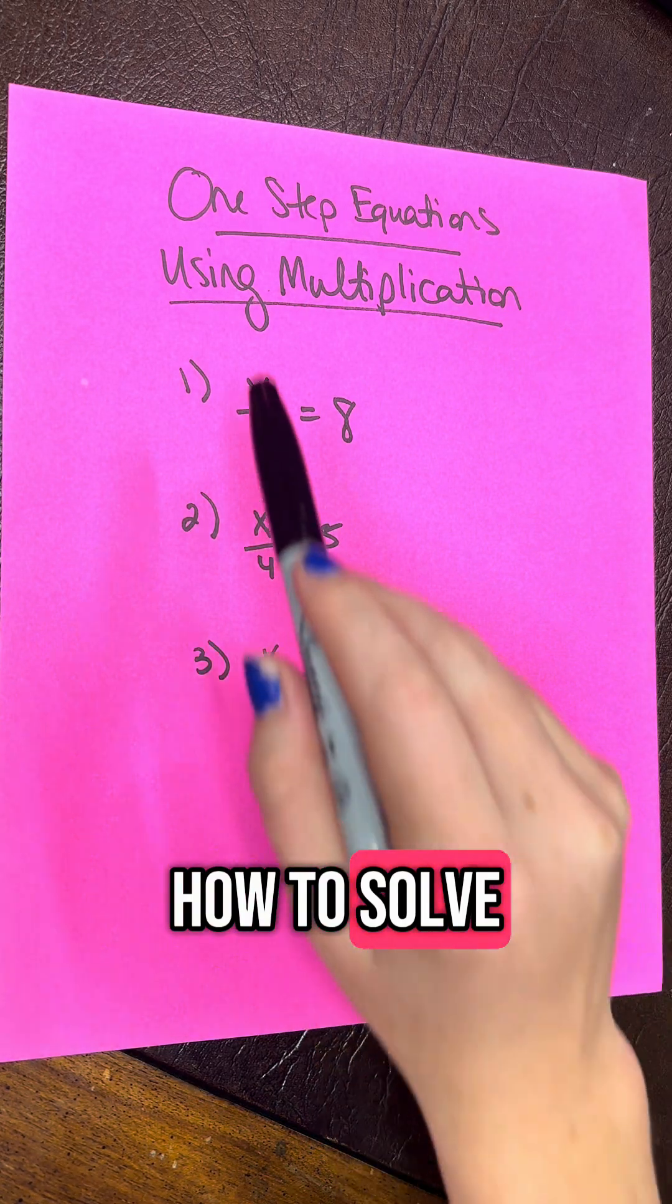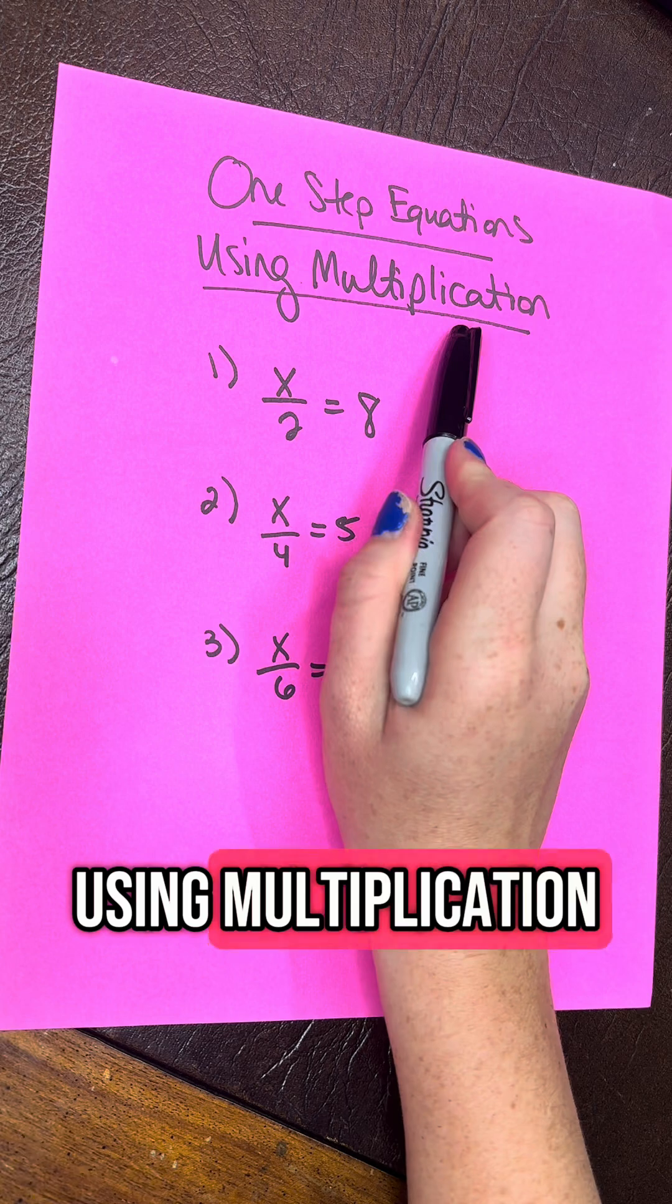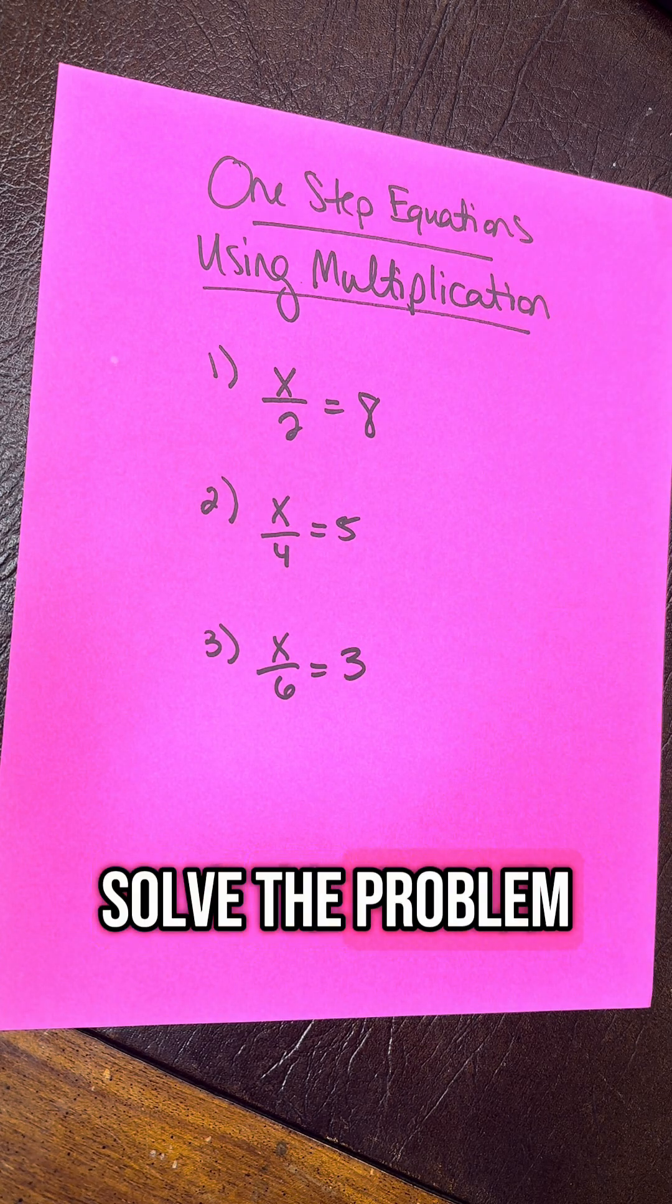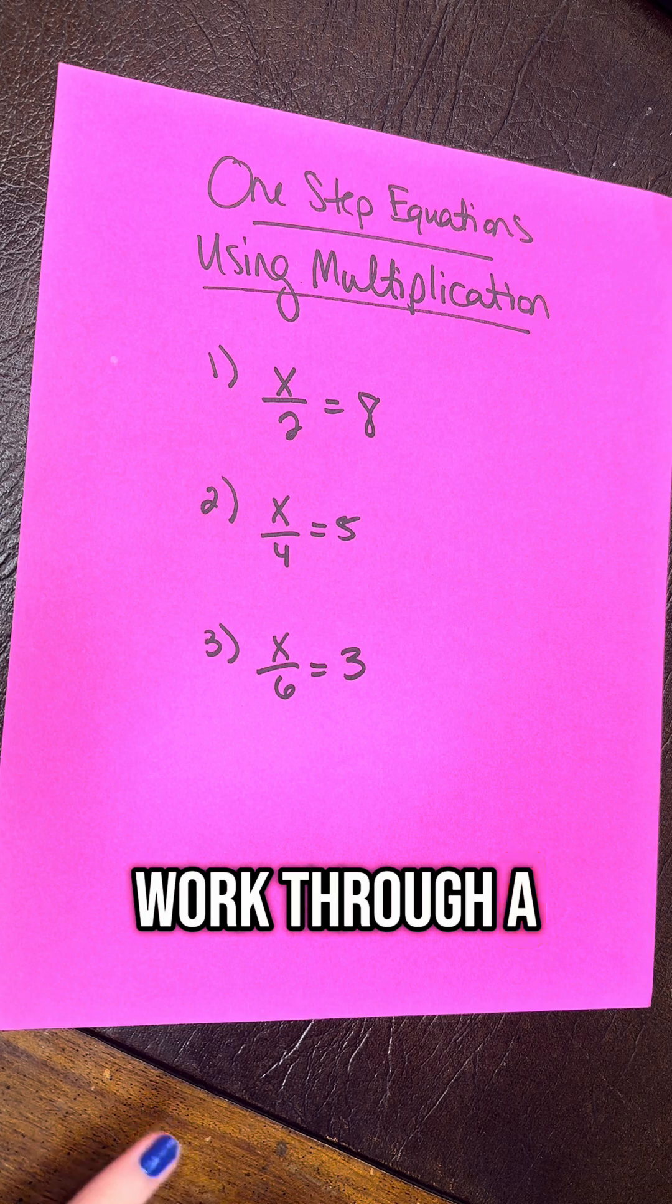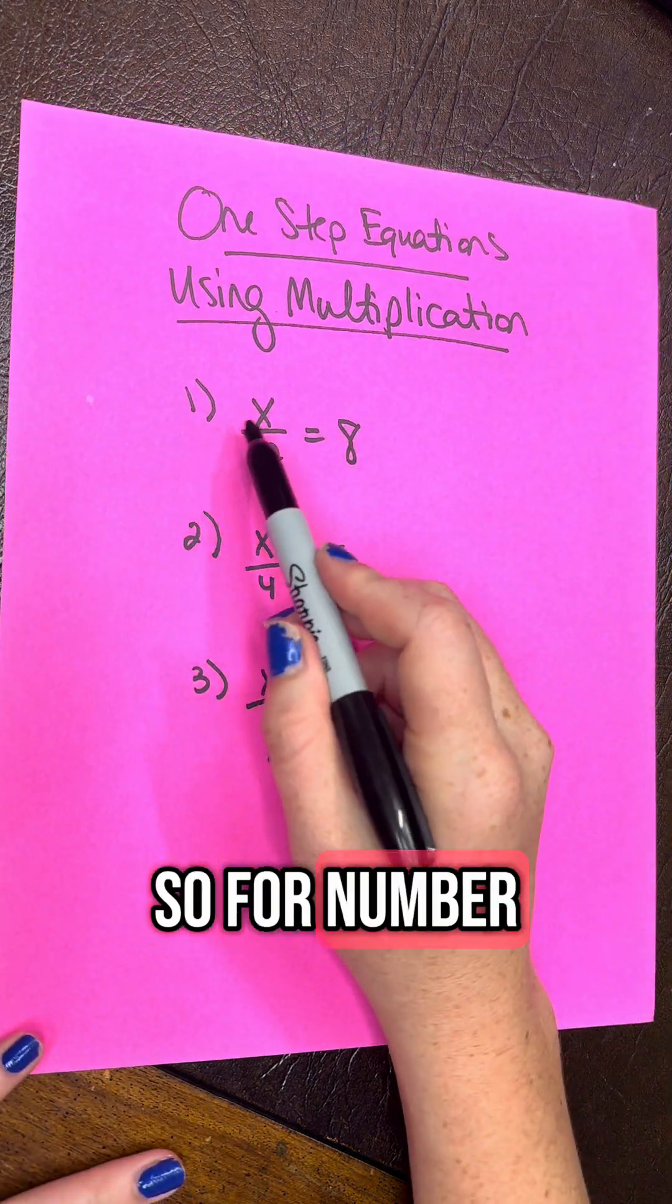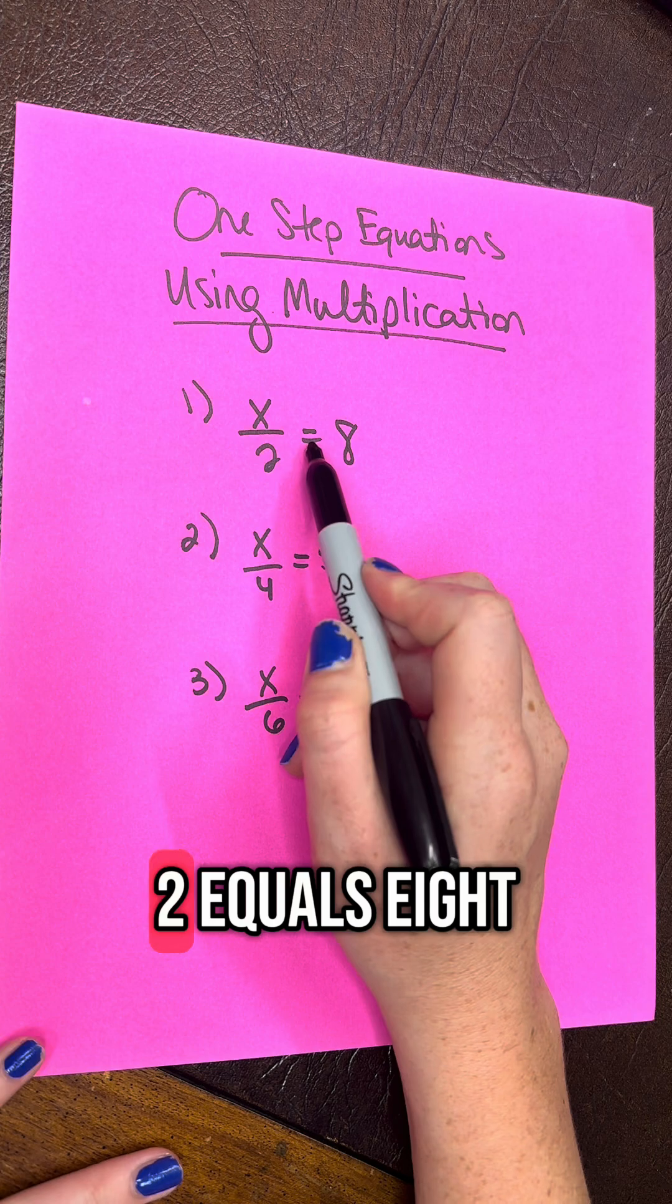Today, we're going to learn how to solve one-step equations using multiplication in order to solve the problem. So we're going to work through a few sample problems here. For number one, we have x divided by 2 equals 8.